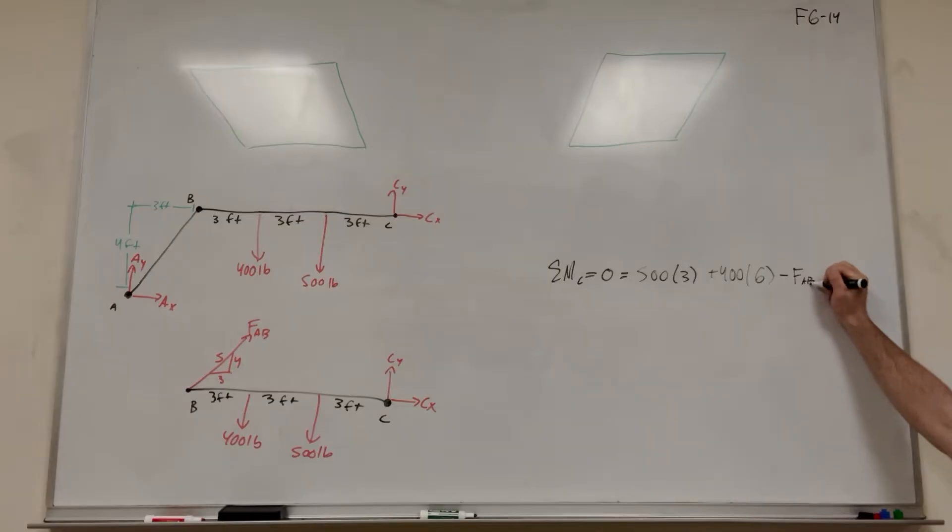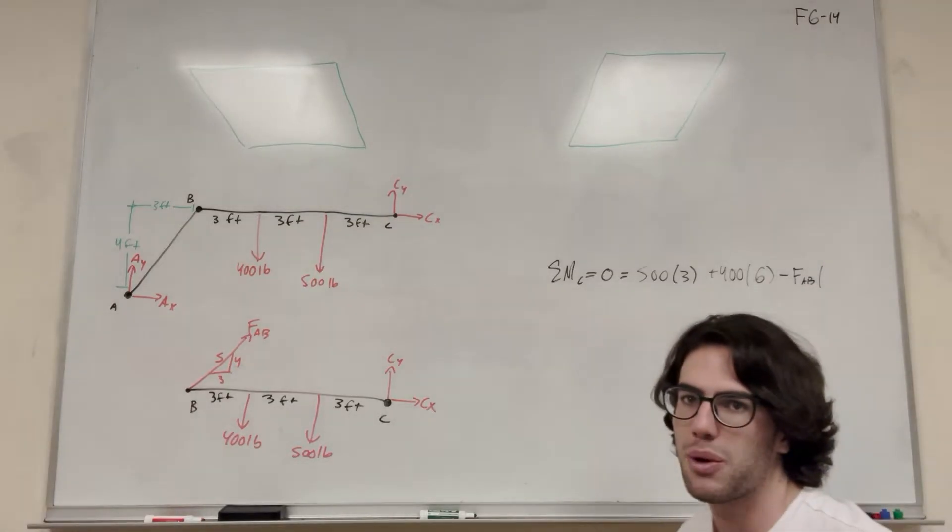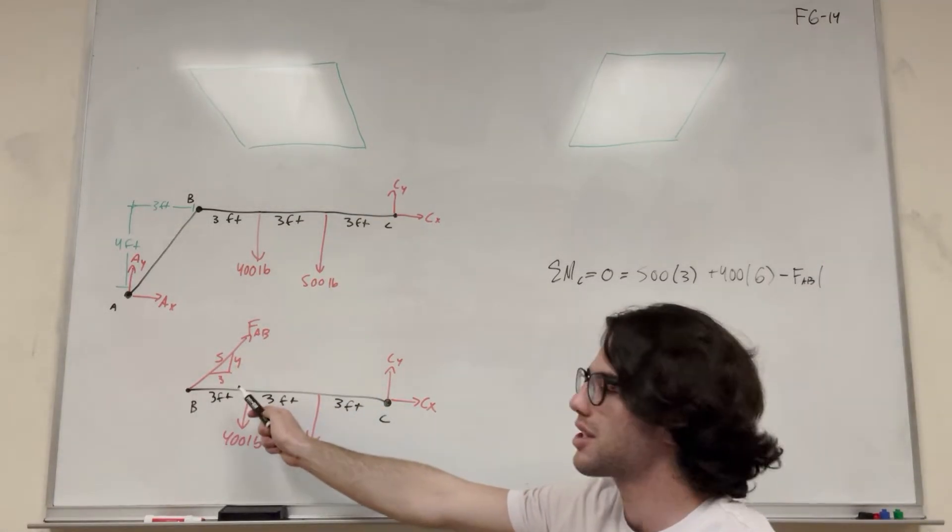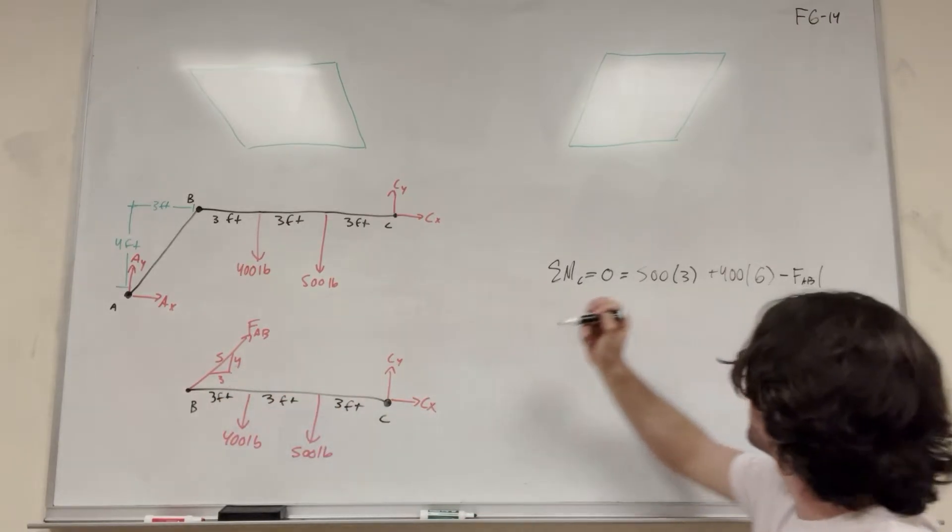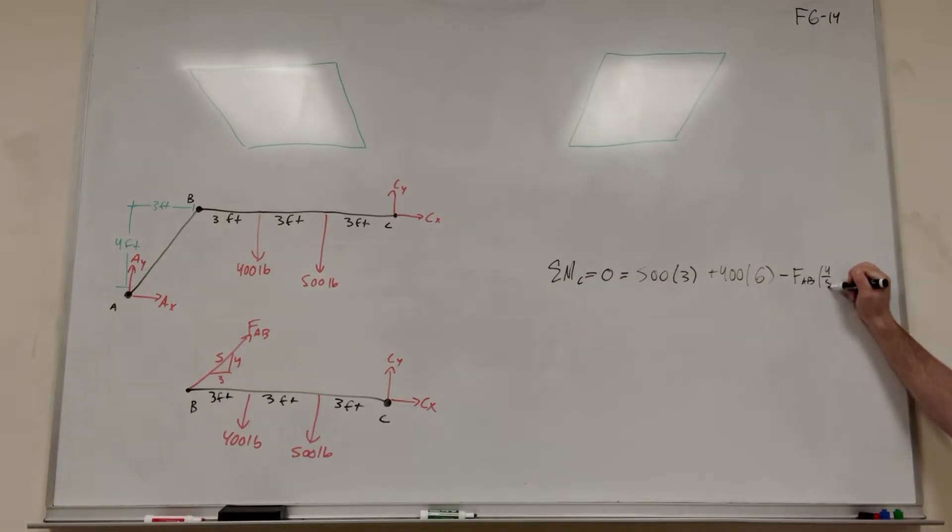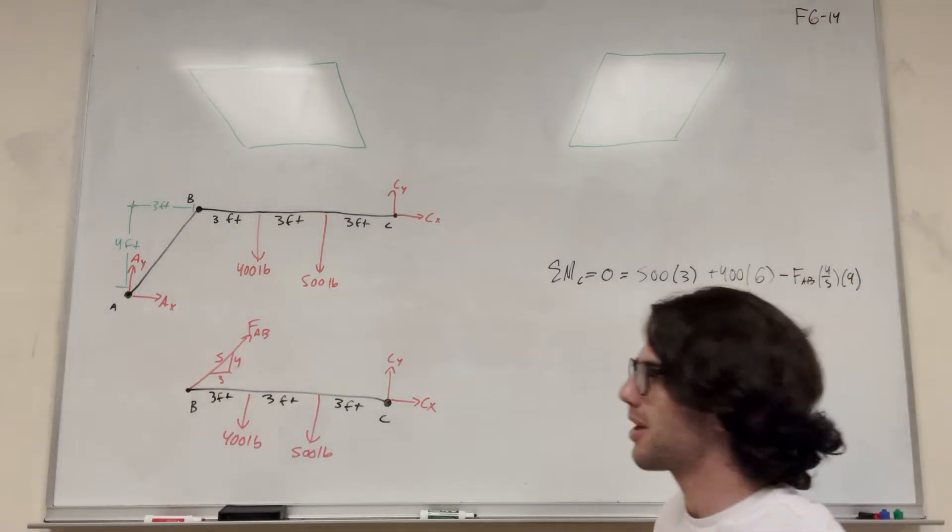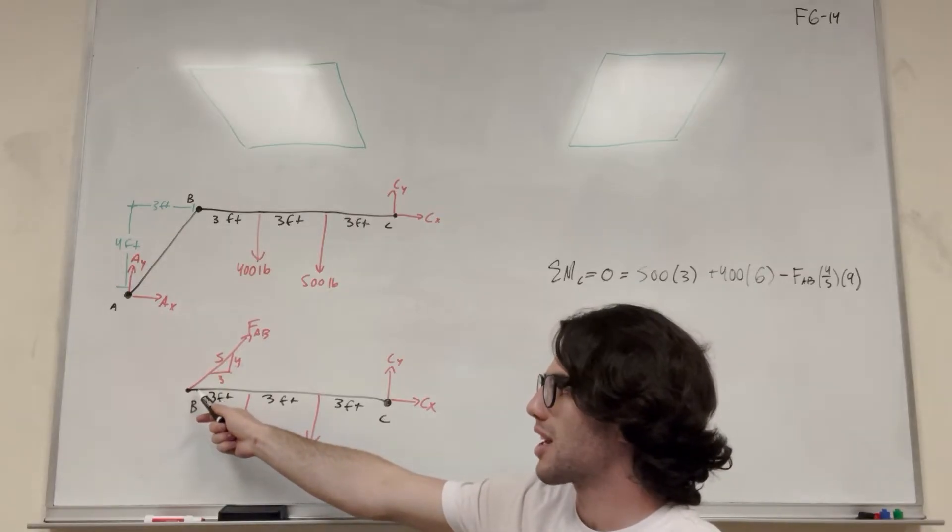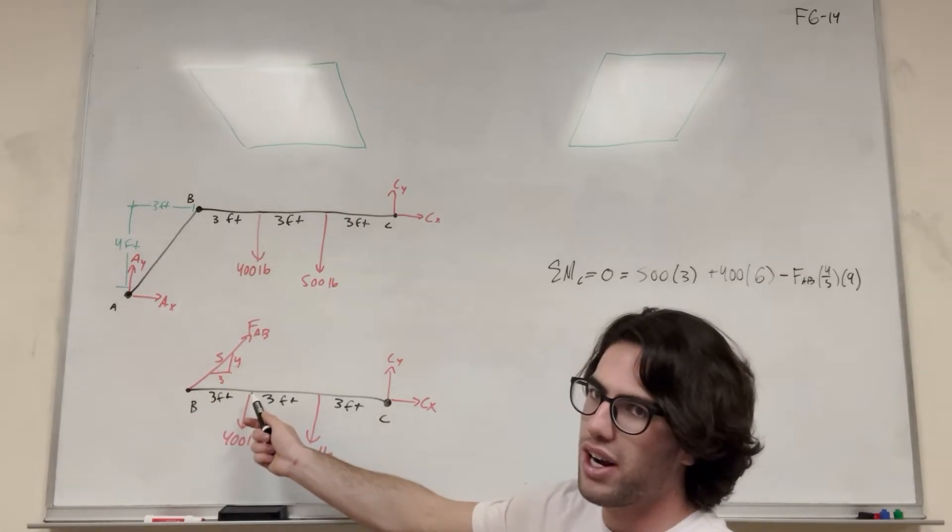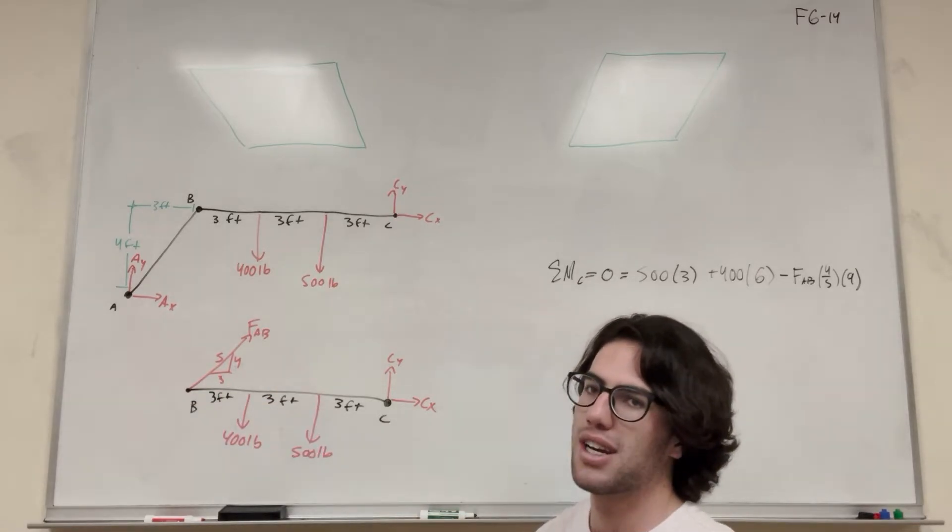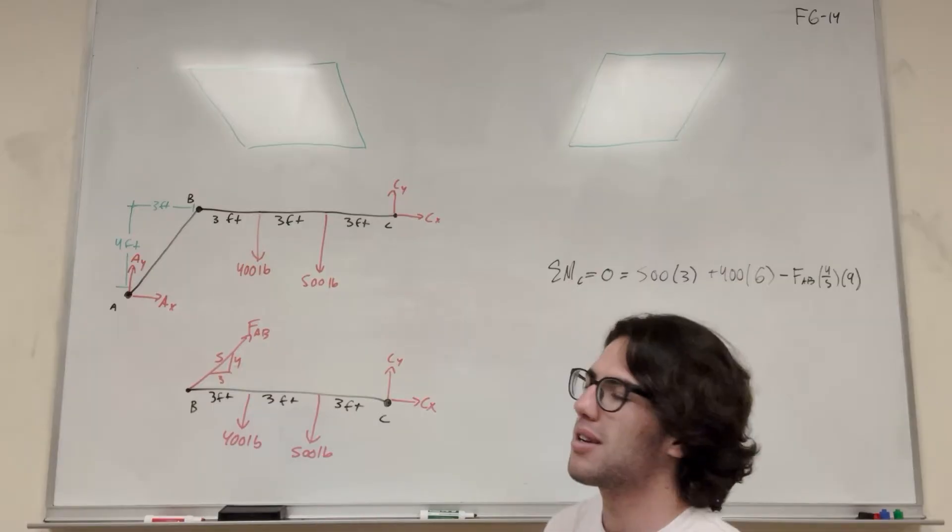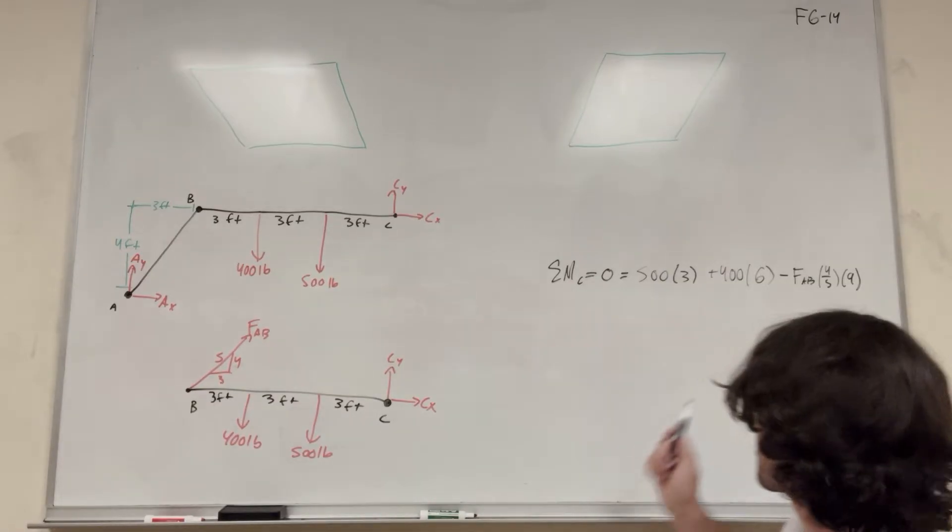So it's going to be minus force AB. But of course force AB acts at an angle, so we want to find just the vertical part first. The vertical part of force AB, we're going to take force AB and multiply it by 4 over 5. And then of course we need to multiply it by its distance, which is 9 feet. So if this is the vertical component, then what about the horizontal component? The horizontal component is going to act here, but its distance in the y direction is going to be zero. You can think about it, if you're pushing directly backwards towards C, it's not going to make a difference about spinning it around the moment.